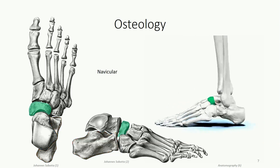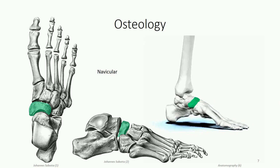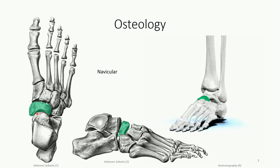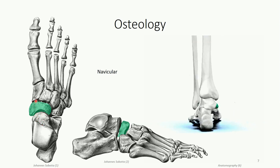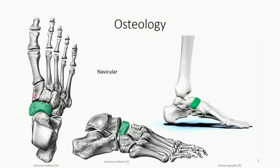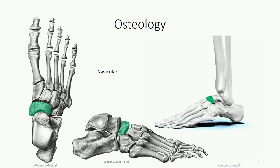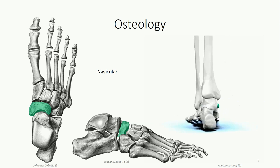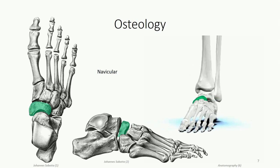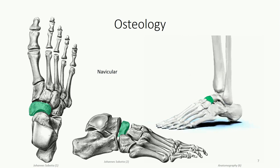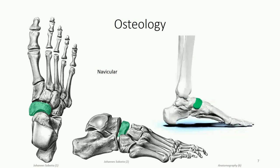Lying anteriorly, we see the navicular bone, which gets its name from its boat-shaped appearance. It has a concave posterior surface that articulates with the head of the talus and a convex anterior surface which articulates with the three cuneiform bones. Medially, it has a very prominent tuberosity for muscle attachment that is palpable on the medial aspect of the foot — unlike the head of the talus, this bony landmark is palpable in both inversion and eversion.